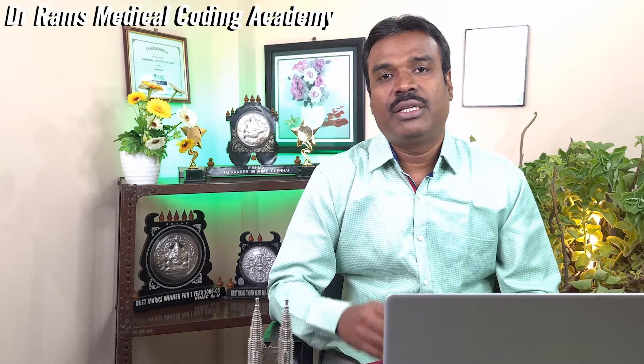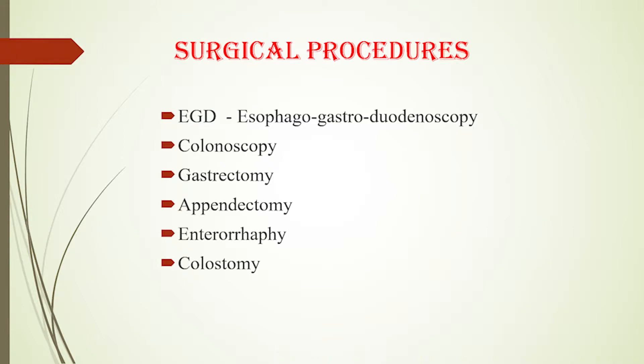Now let's look at surgical procedures. EGD is a diagnostic technique in which the surgeon visualizes the upper digestive tract — the esophagus, stomach, and duodenum — called esophagogastroduodenoscopy: esophago (esophagus), gastro (stomach), duodeno (duodenum), scopy (visualization). Colonoscopy is complete visualization of the entire colon to the cecum level; proctoscopy is visualization of the rectum. Gastrectomy is partial or complete resection of the stomach. Enteroraphy — entero (intestine) + raphy (repair) — is suture repair of the intestine. Appendectomy is removal of the appendix; colostomy is an artificial opening created into the colon.